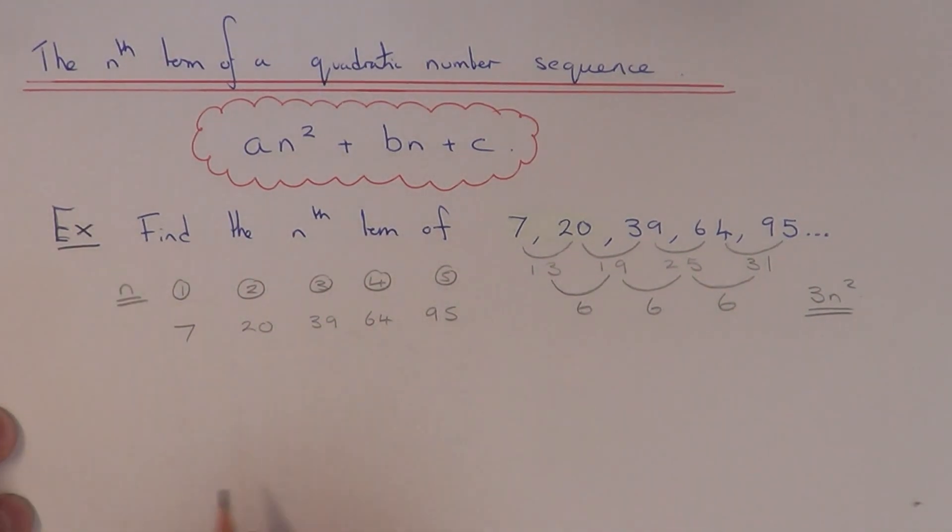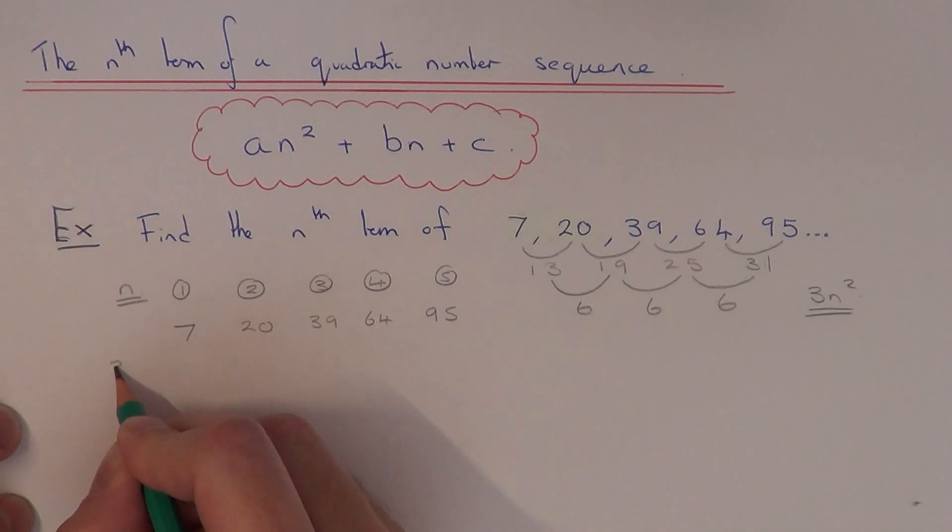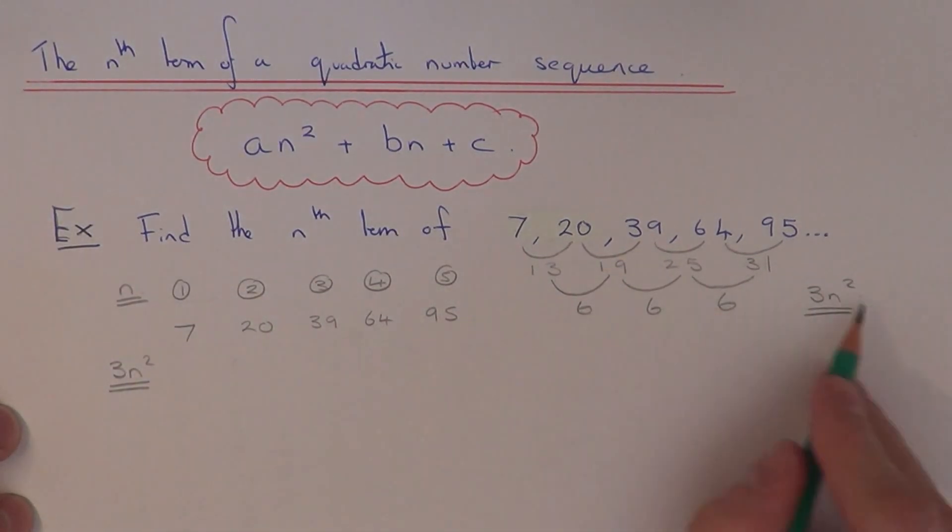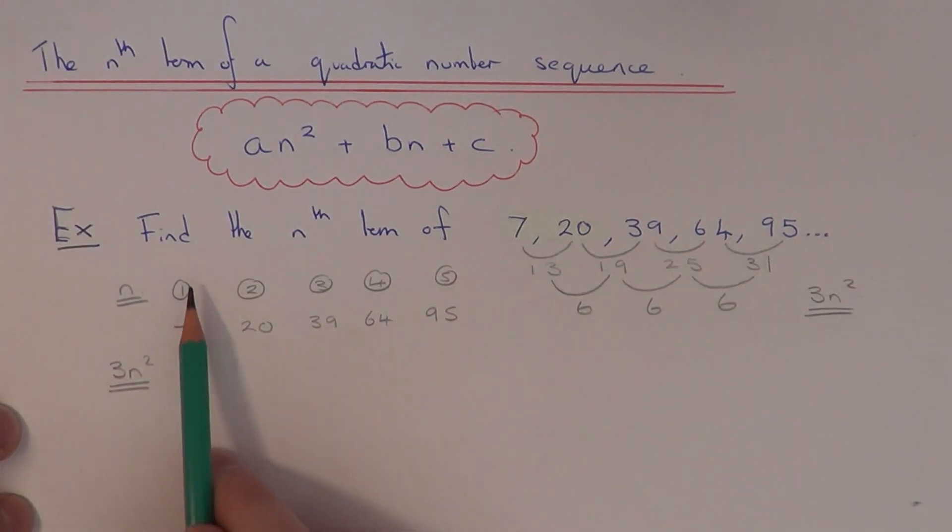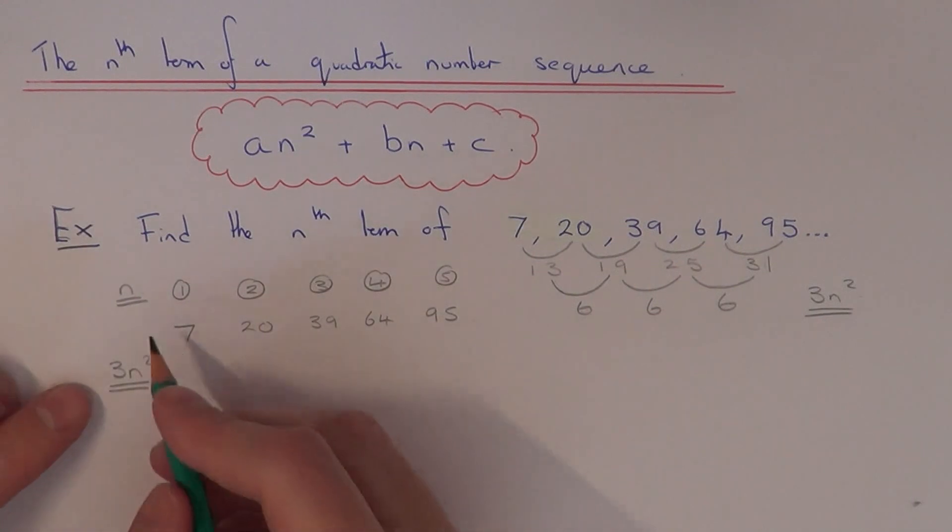So now we're going to figure out the values of 3n². So we can work out the values of 3n² by subbing in the numbers 1, 2, 3, 4 and 5.